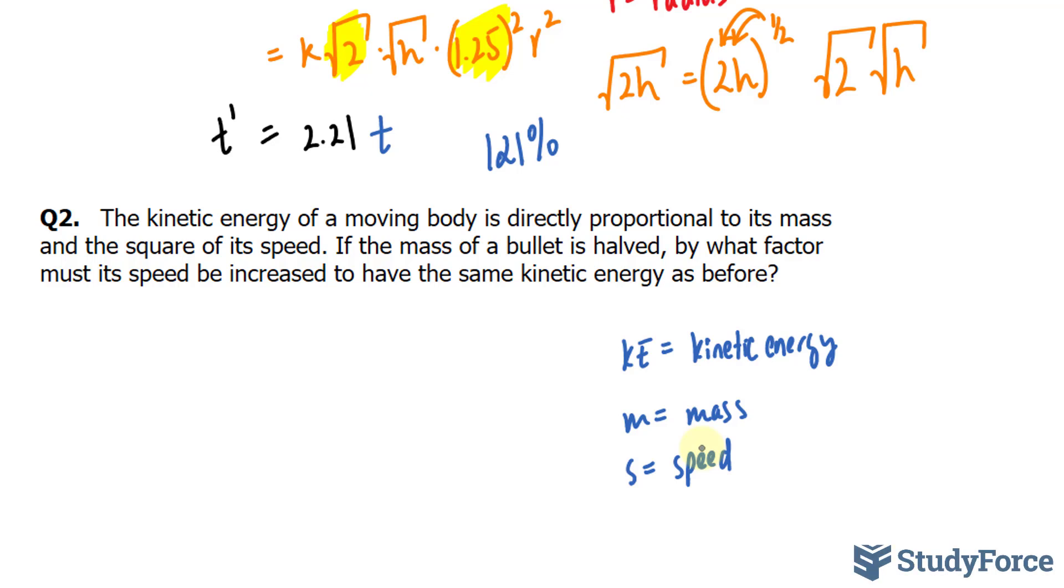If the mass of the bullet is halved, by what factor must its speed also be increased to have the same kinetic energy as before? So let's set up an equation for the before scenario. We have kinetic energy is equal to K our constant, mass, which is directly proportional, and the square of the distance, so S squared. These are the before conditions.